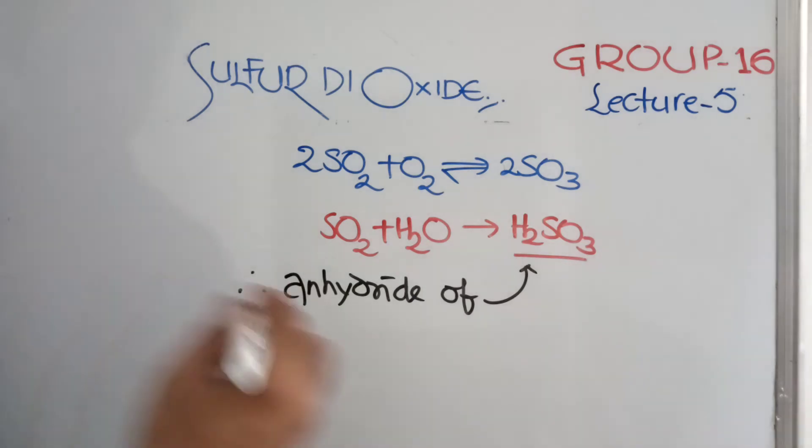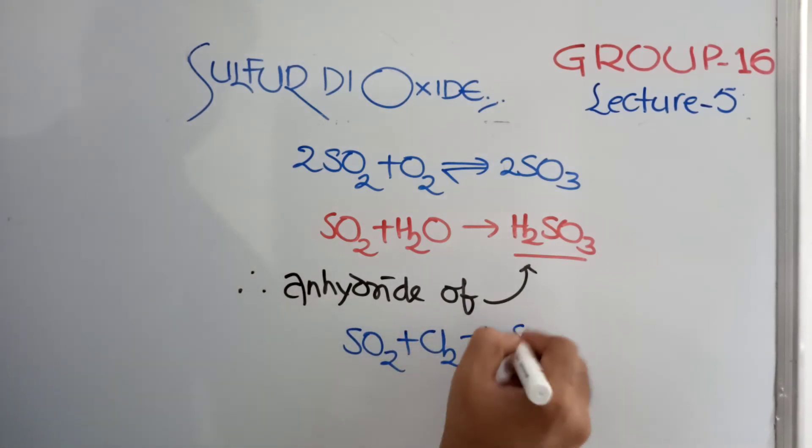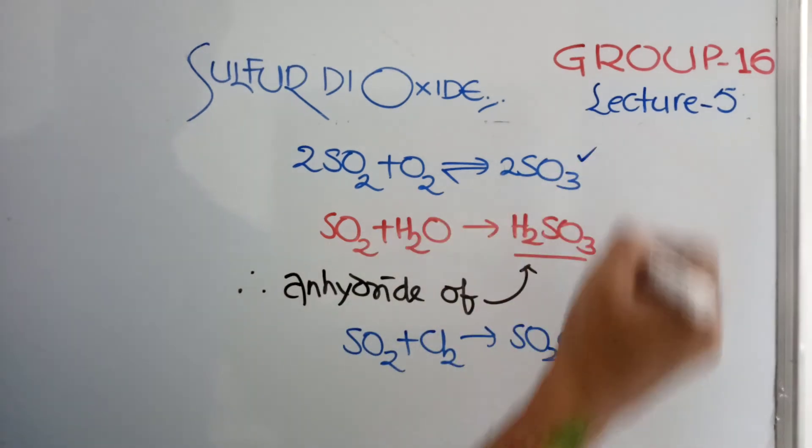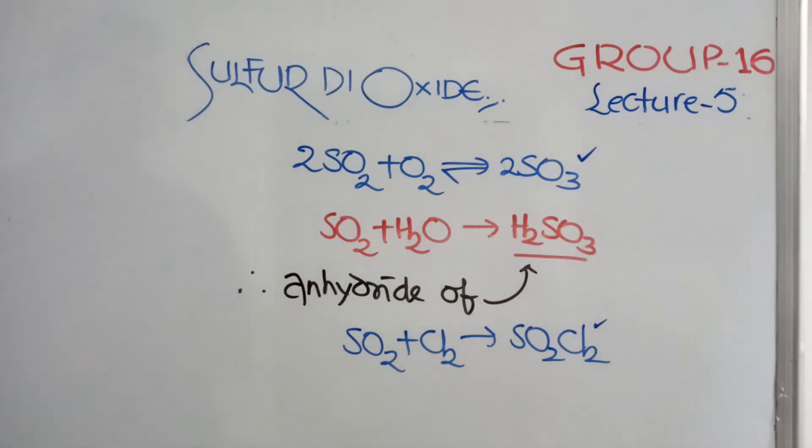Anhydride of Sulfurous Acid. It can join with Chlorine to form Sulfuryl Chloride, SO2, Cl2. This kind of reactions you can say. Additional reactions, nothing is going out. Simply it is adding SO2, Cl2, SO3, Sulfuryl Chloride, Sulfur Trioxide. These are very interesting.